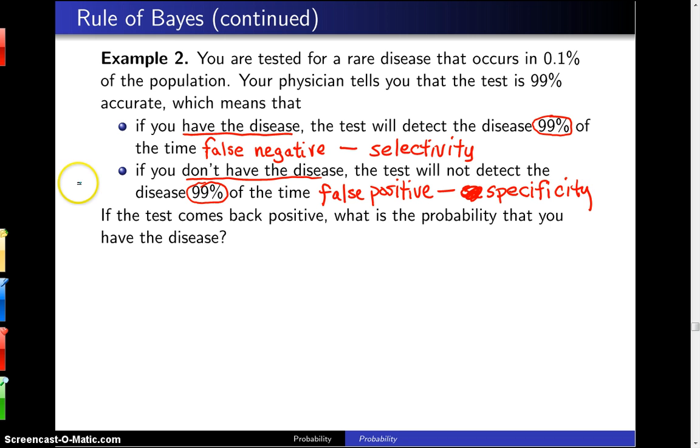More generally, the errors that can be made here are known by statisticians as a type 1 and a type 2 error.